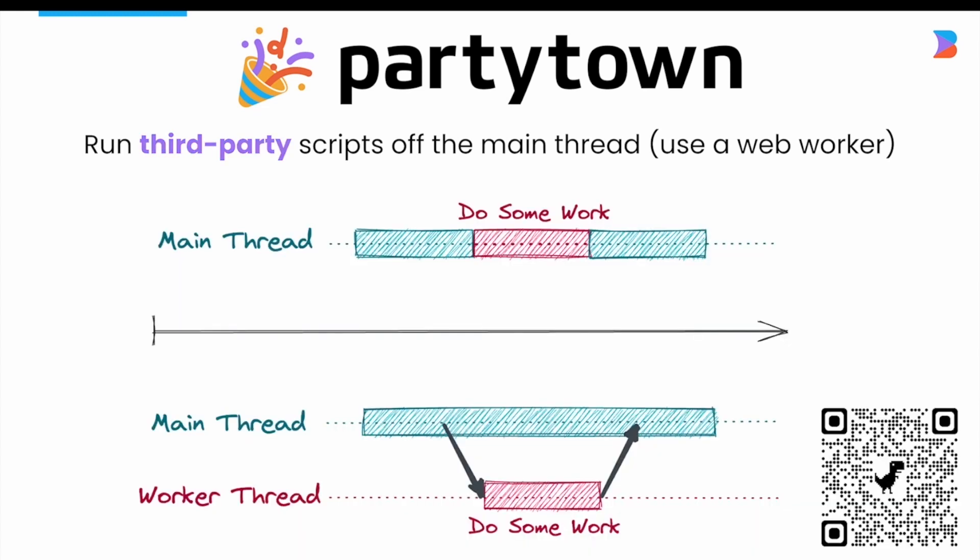By using a web worker, the main thread is dedicated to your application and the third-party scripts are offloaded to a background task. Instead of all scripts sharing one thread and continuously blocking each other, PartyTown can offload many third-party scripts to their own web worker thread. PartyTown is still experimental, but so far it's been proving to make some large performance gains.